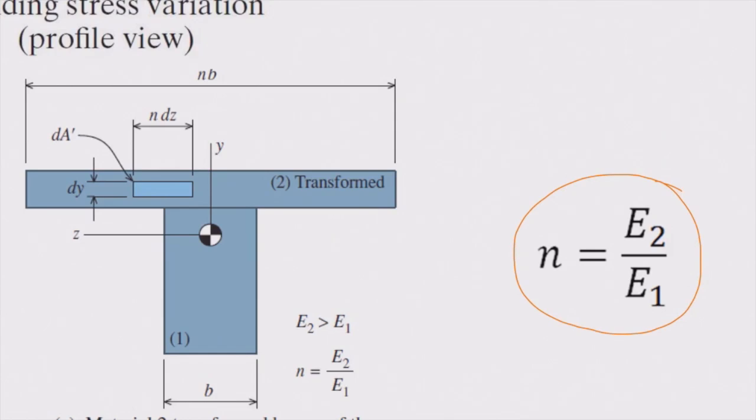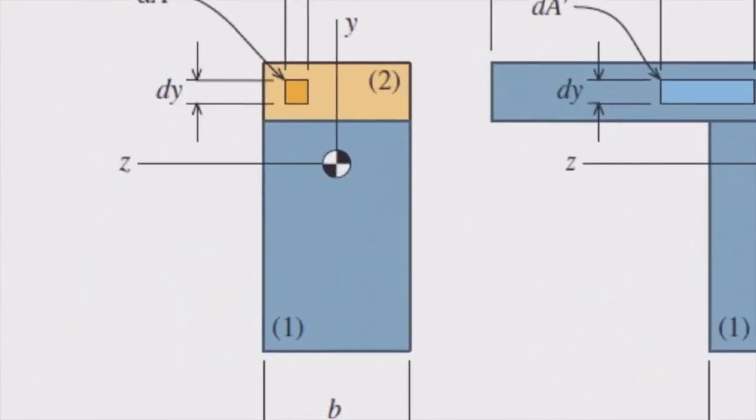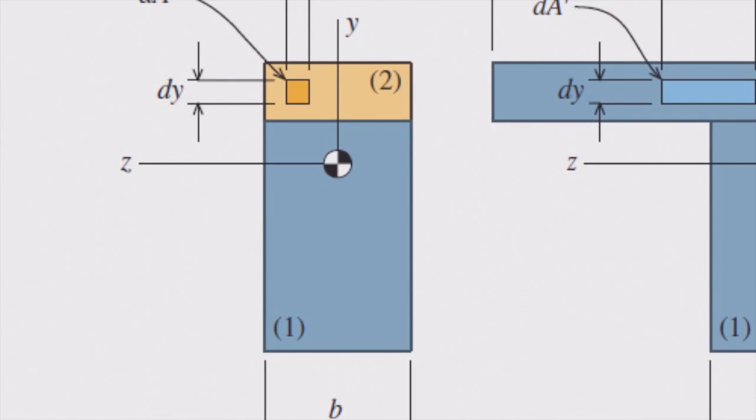You may ask a question here: we transformed the top material, section two, to the bottom material by increasing its width. Is there an opposite way to that? Can we transform the bottom material to the top material and create a section all made from material two? Yes, that's possible. In that case, the n factor reverses.